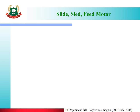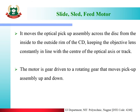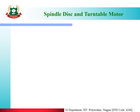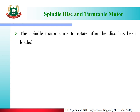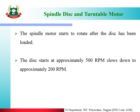The slide/sled/feed motor moves the optical pickup assembly across the disk from the inside to the outside rim of the CD, keeping the objective lens constantly in line with the center of the optical track. The motor is gear-driven to a rotating gear that moves the pickup assembly. The spindle/turntable motor starts to rotate after the disk has been loaded, starting at approximately 500 rpm and slowing down to approximately 200 rpm.